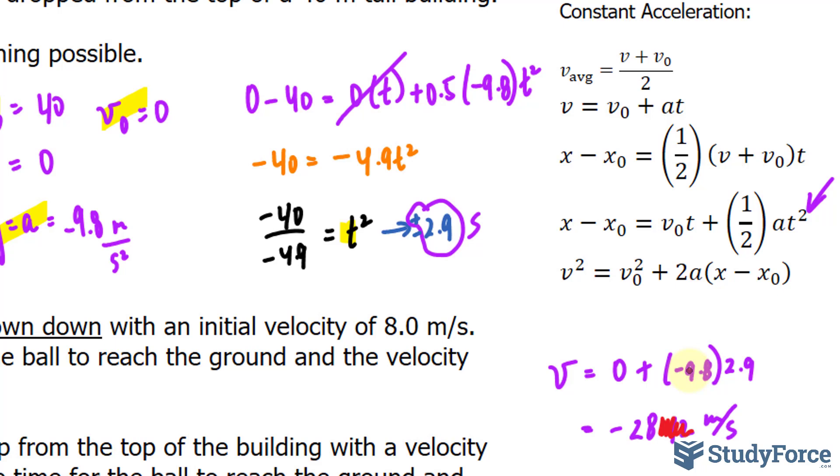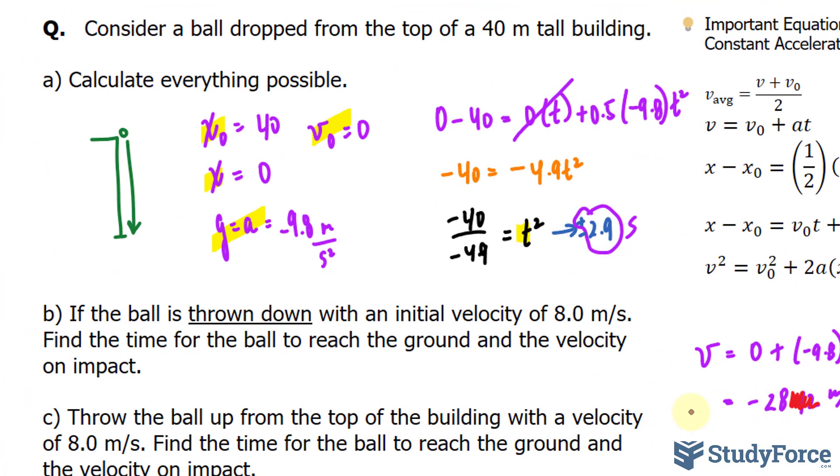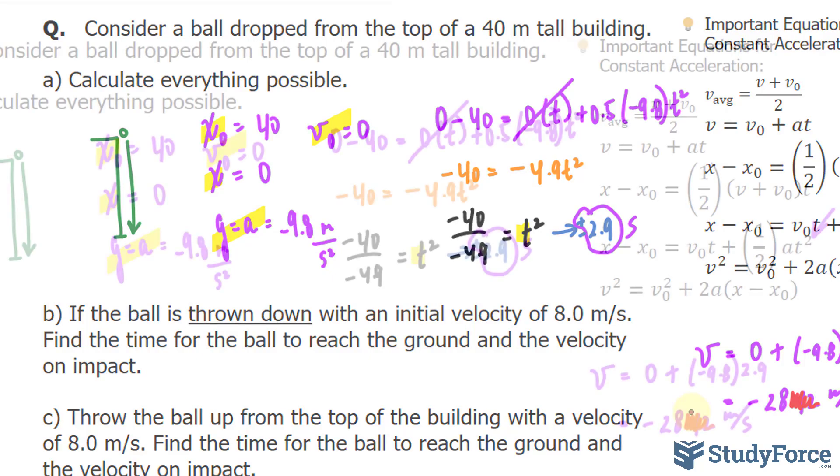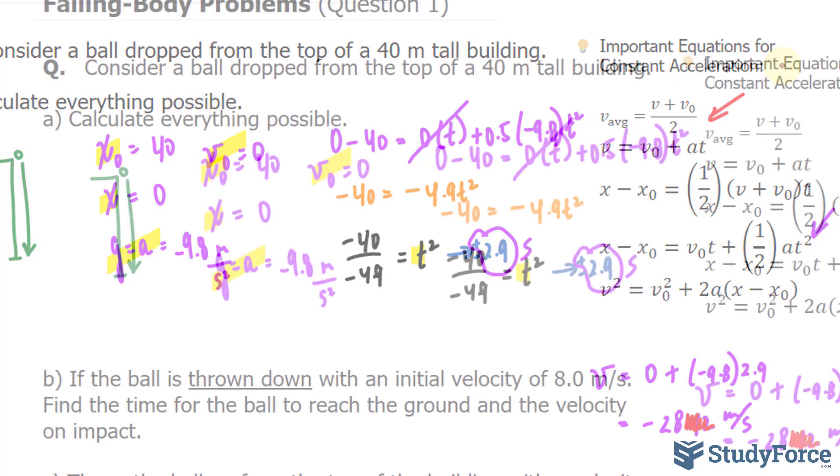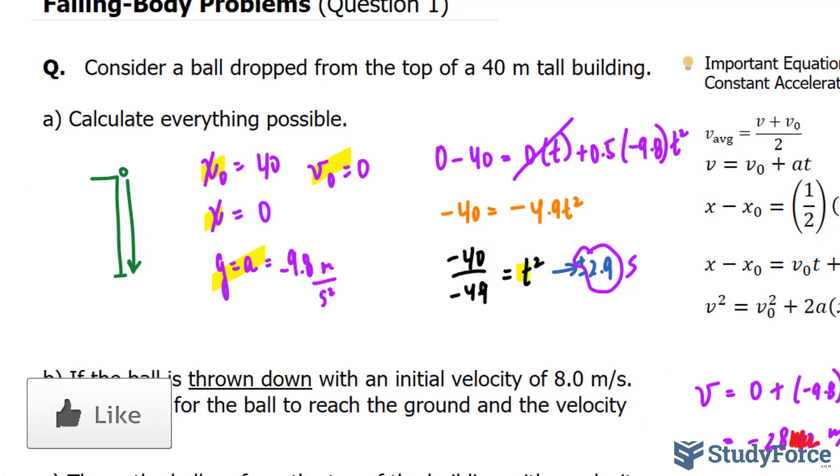Now we have v final, we have v initial, x initial, x final and the time and acceleration. Using this information, we can even find the average velocity if we wanted to. That's the answer to question A, let's move on to question B.